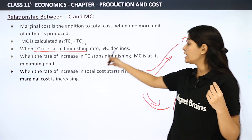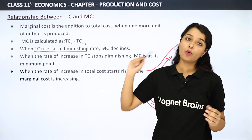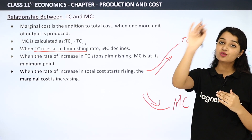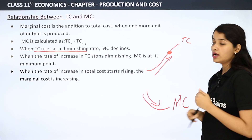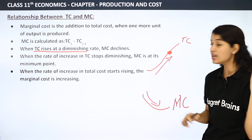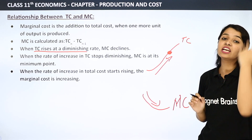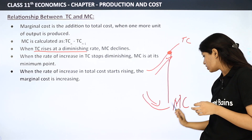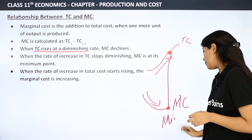Then, when the rate of increase in TC stops diminishing, MC is at its minimum point. There comes a point where TC is no longer increasing at a diminishing rate — it has changed its rate. After this point, TC will start increasing at an increasing rate. At this point, our MC is at its minimum.